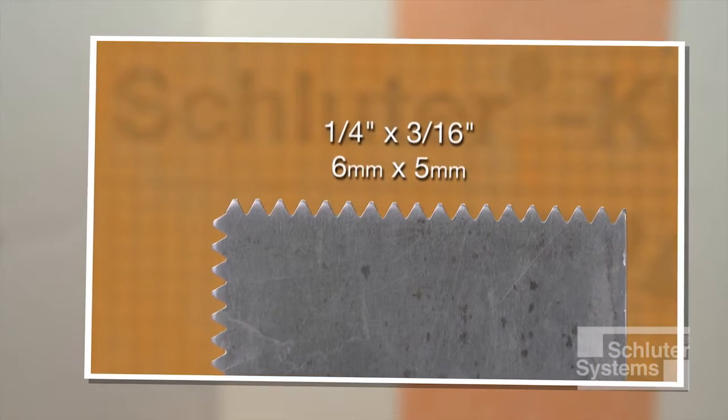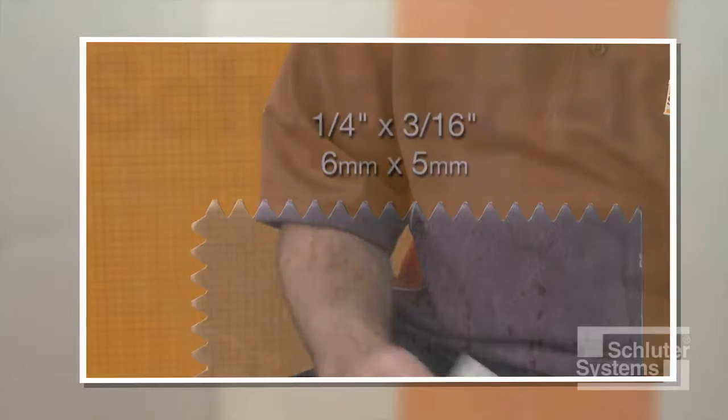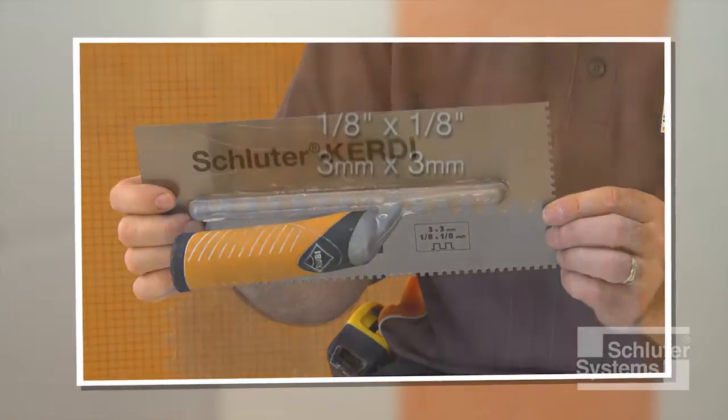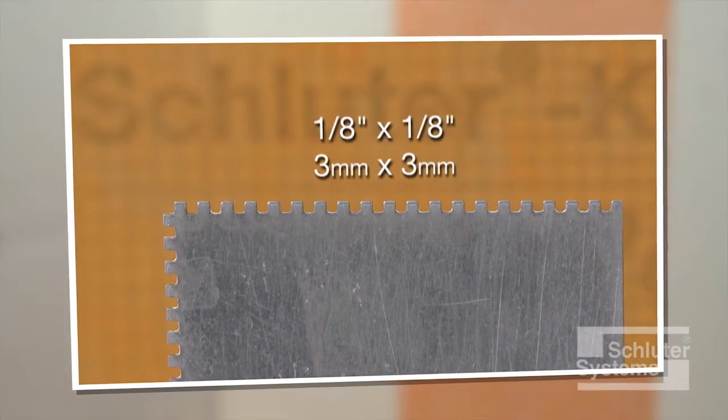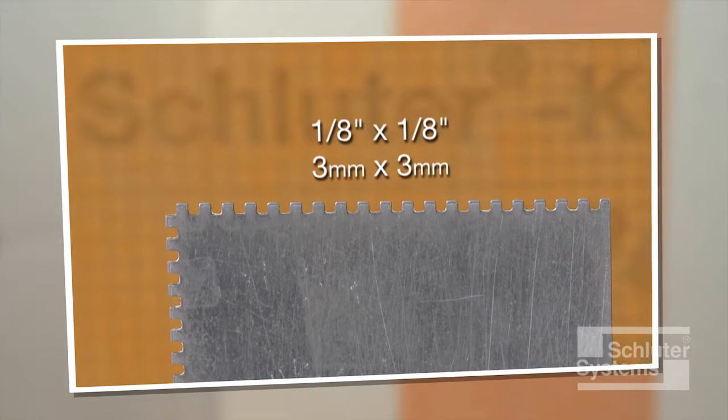A one-quarter inch by three-sixteenth inch V-notch trowel or the Schluter KERDI trowel which features a one-eighth inch by one-eighth inch square notch design is used to apply the mortar.